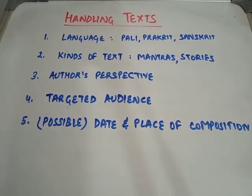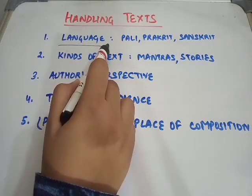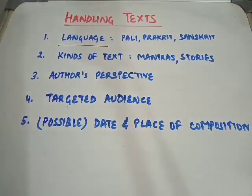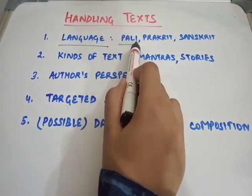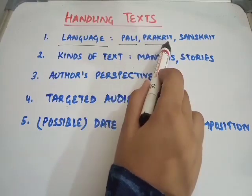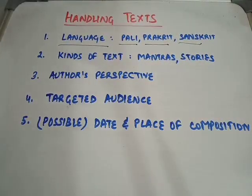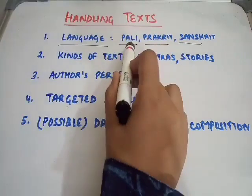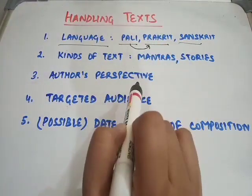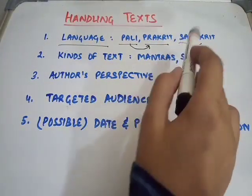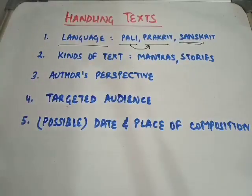The first thing historians consider is the language in which the text is written — whether the language used was Pali, Prakrit, or Sanskrit. Pali and Prakrit were the languages of ordinary people, whereas Sanskrit was considered an elitist language, meant for priests or elites.